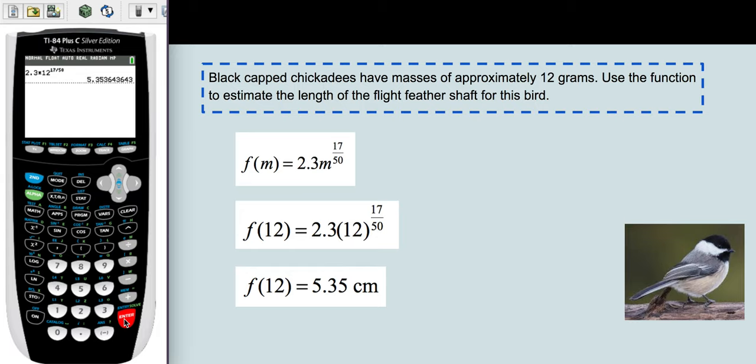5.35 is rounded to the nearest hundredths. This is the length of the shaft of the flight feather, according to the model, for the black-capped chickadee, so it's measured in centimeters, 5.35 centimeters. And if you convert this over to inches, then you get about 2 inches for this flight feather length, and that seems fairly reasonable for the small bird that is the chickadee.